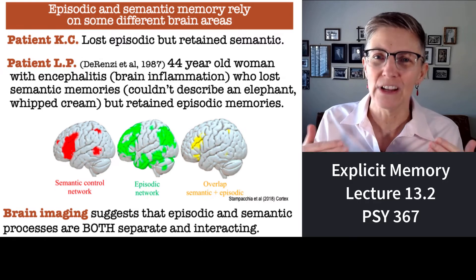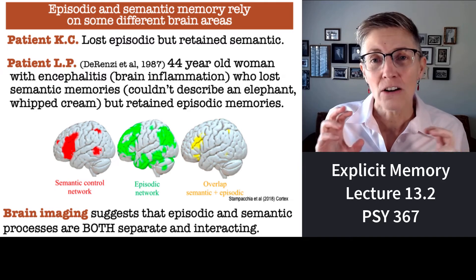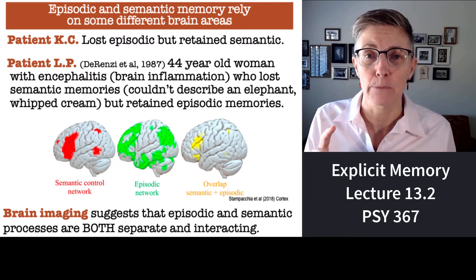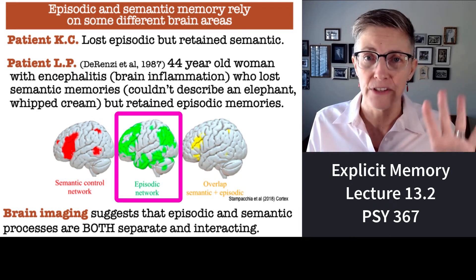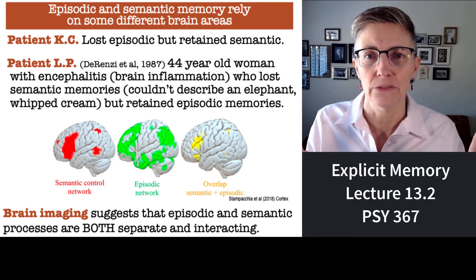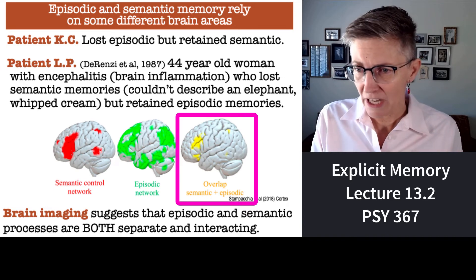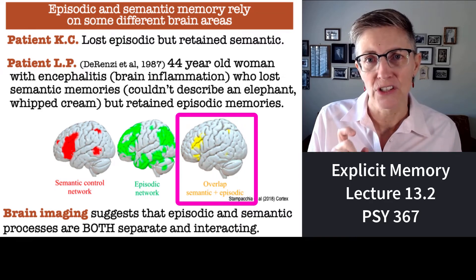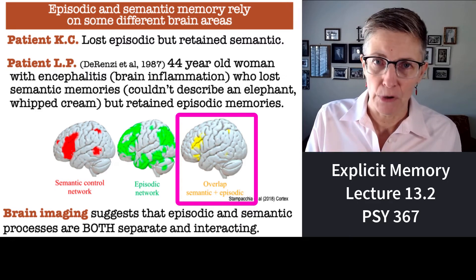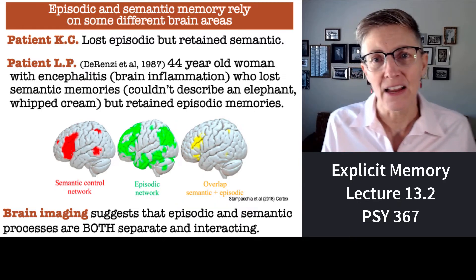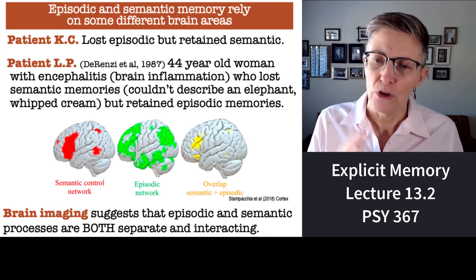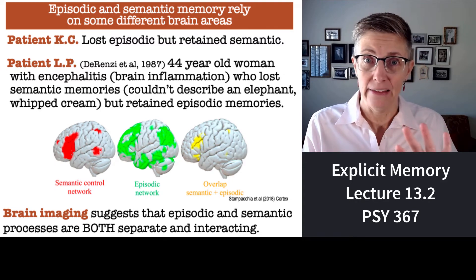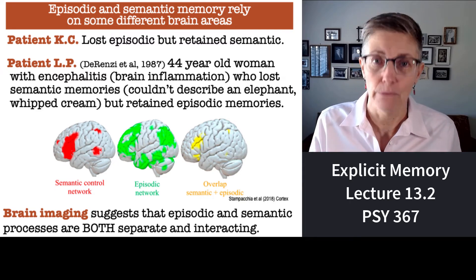The story, as is usually the case, is a little less clear than a clean separation. There are many brain areas that do not overlap between semantic and episodic memory — areas devoted specifically to episodic memory and different areas devoted to semantic memory — but they're not 100% different. There are also areas of overlap. Looking at this 2018 figure from the journal Cortex, the yellow splotches show which areas overlap between semantic and episodic processes. Comparing the yellow overlap areas with the full extents of episodic and semantic activity, there's not nearly as much overlap as there is separation, but some overlap does exist.